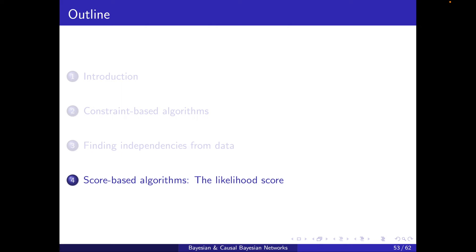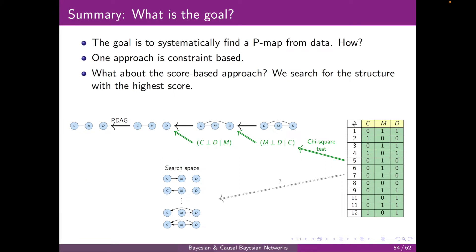Hello and welcome to section 4, score-based algorithms, the likelihood score. We saw how to use a constraint-based approach to find a p-map from data. What about score-based approaches? There we search for the structure with the high score. But what are the common scores?